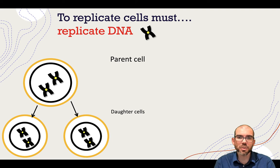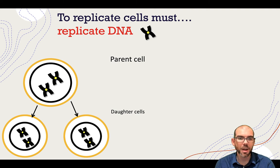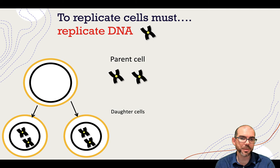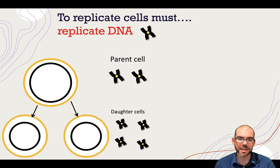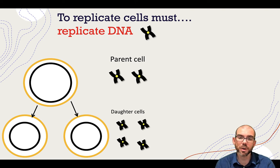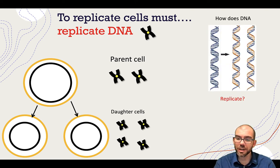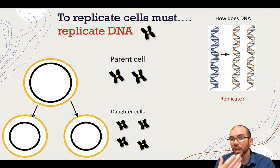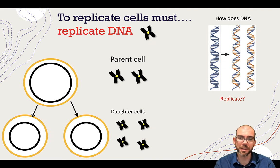If one cell is going to become two, then its DNA is going to need to be replicated. In this diagram to the left, you can see an example of one parent cell becoming two daughter cells. That parent cell has two chromosome structures that contain DNA. Notice that each of those daughter cells, which are identical, each have their own two chromosomes. So we went from two chromosomes to four. We want to understand how DNA is able to do that — how we can go from 100% of the material to 200%, how one double helix can become two.